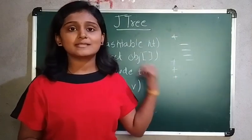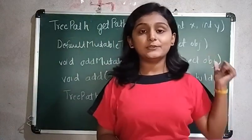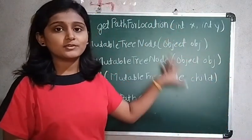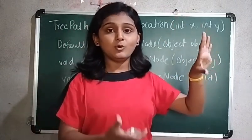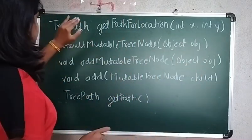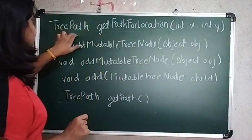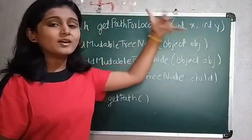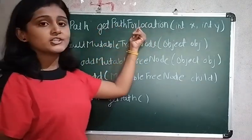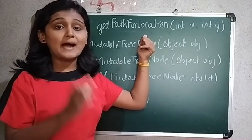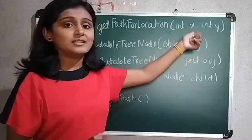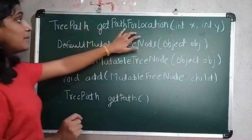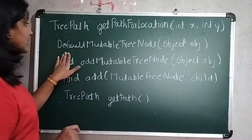Next we will see the methods and steps one by one. The first method is getPathForLocation(int x, int y). You pass the coordinates, and the use of this method is to translate the mouse click to a particular position — that means x and y coordinates are where the mouse is clicked.